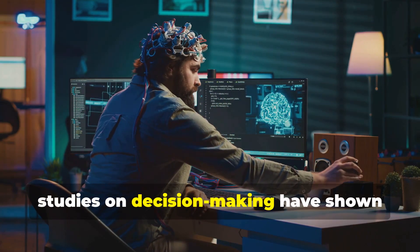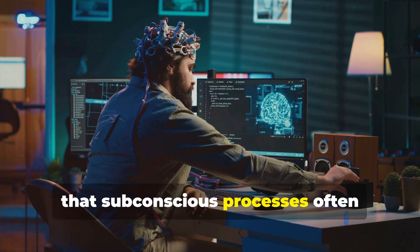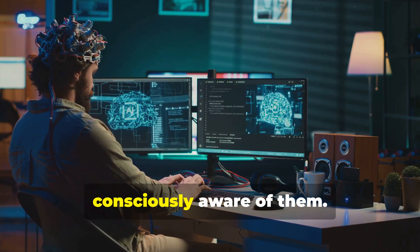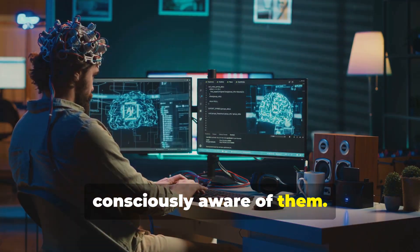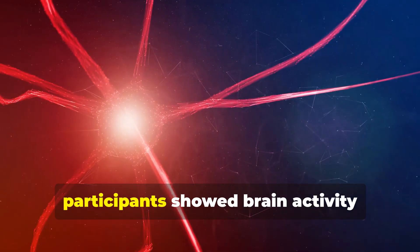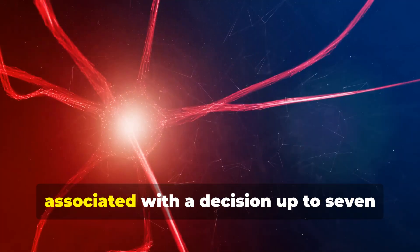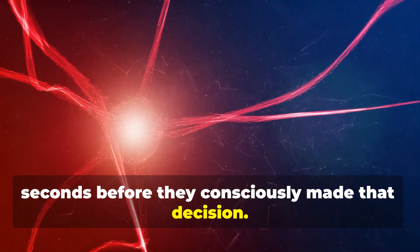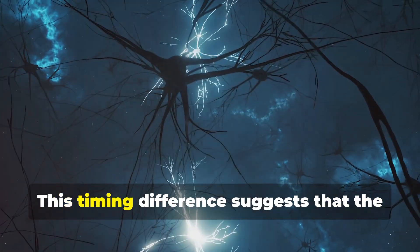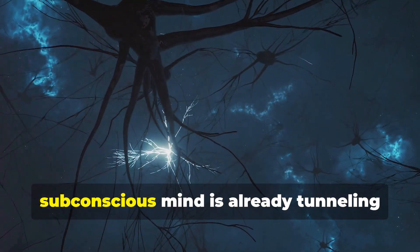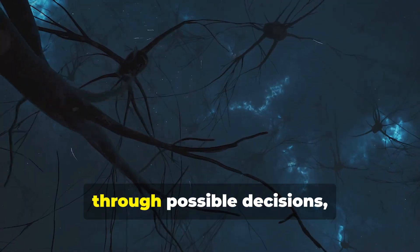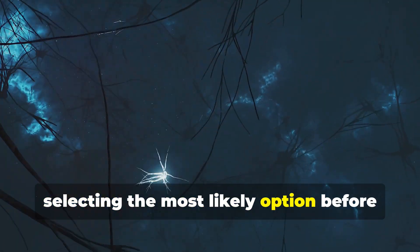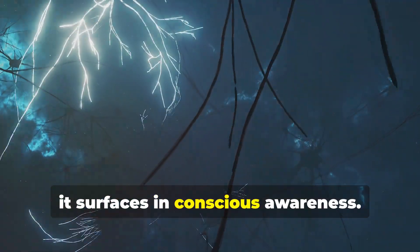Furthermore, studies on decision-making have shown that subconscious processes often influence our decisions before we are consciously aware of them. In one experiment, participants showed brain activity associated with a decision up to seven seconds before they consciously made that decision. This timing difference suggests that the subconscious mind is already tunneling through possible decisions, selecting the most likely option before it surfaces in conscious awareness.